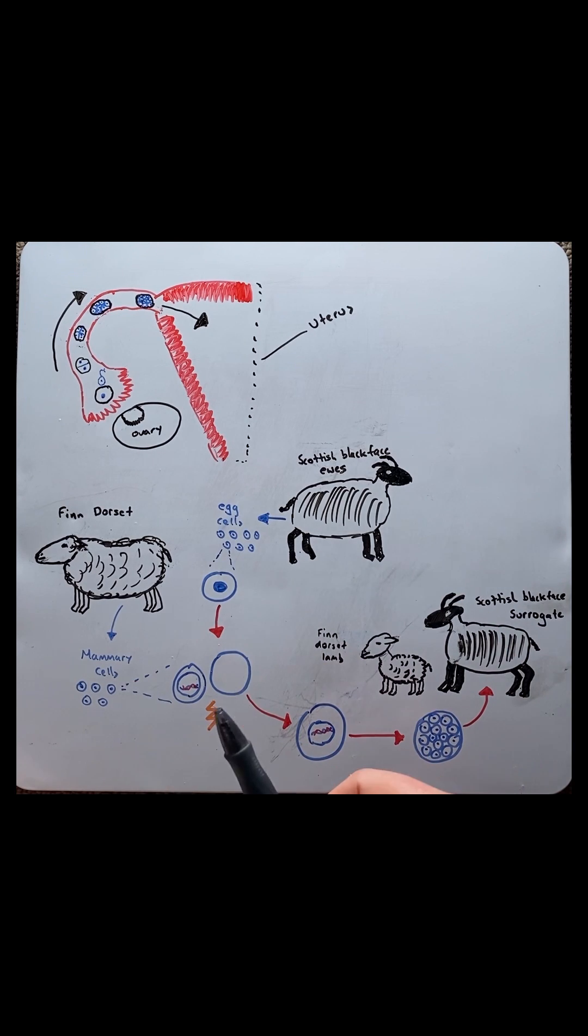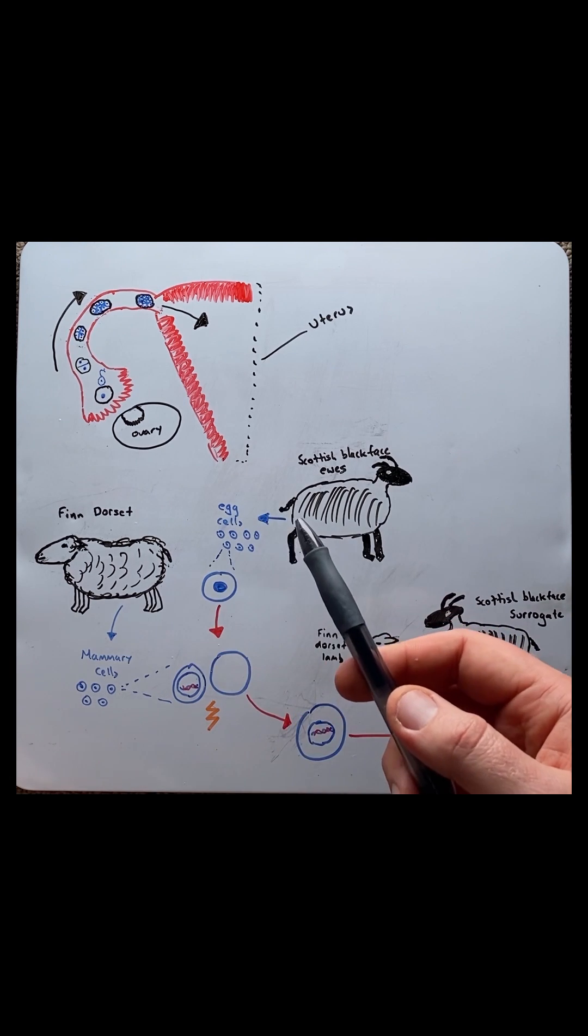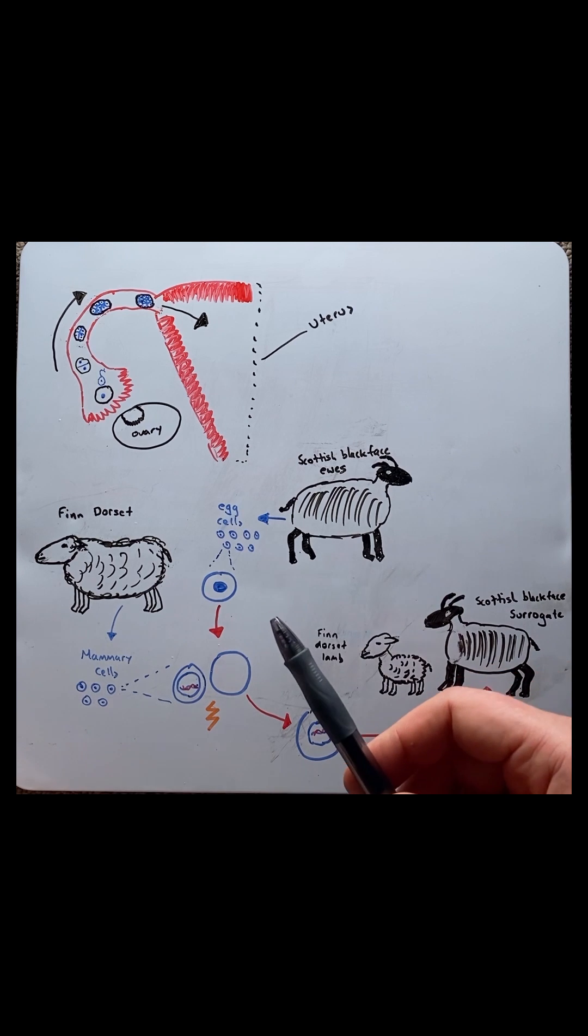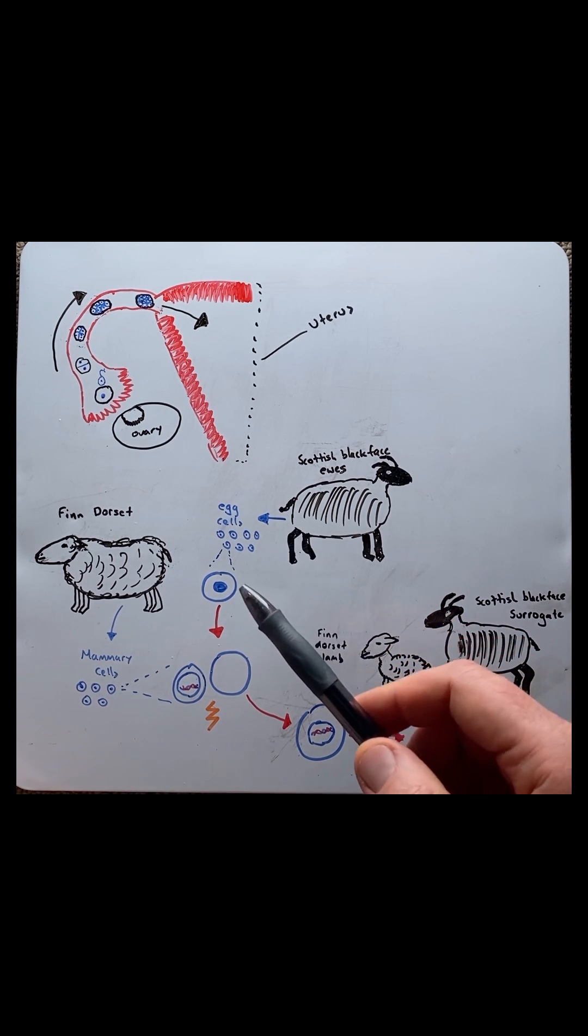Cloning is the process of making a genetically identical organism through non-sexual means. In this video I will illustrate animal cloning using Dolly the Sheep as an example, who was cloned in 1996. But first let's look at natural fertilization and embryogenesis.